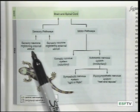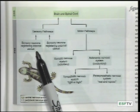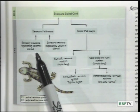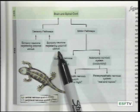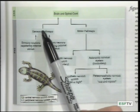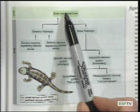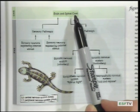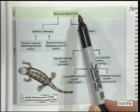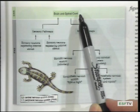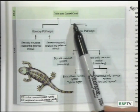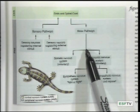Another way of looking at the differences between the peripheral and central nervous system is via this diagram. You have sensory neurons registering internal stimuli and sensory neurons registering external stimuli, taking these via the sensory pathway to the central nervous system — to those interneurons found within the brain and the spinal cord.